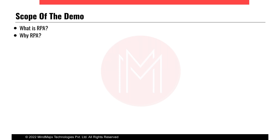One important thing to keep in mind is that RPA is very rule-based automation. Whatever you ask the bot to do, it will only do that. These days UiPath, Automation Anywhere, and other tools are bringing AI capabilities into the tool — it is still at a nascent stage — but predominantly RPA is rule-based. Whatever rules you give the bot, it will exactly follow only those.